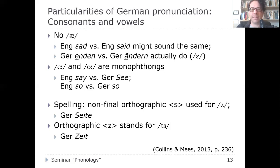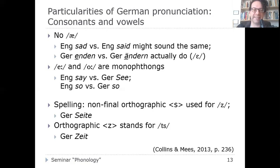Comparing 'say' and 'See' — it's not only the vowel but also the consonant that differs. What makes it confusing is the spelling: in German, non-final orthographic 's' is used for the voiced fricative /z/, which doesn't work that way in English. For example, German 'Seite' has an initial /z/. On the other hand, the letter 'z' in German represents the affricate /ts/ — as in 'Zeit' — which appears in English mainly in loanwords like 'tsunami' and 'pizza'.